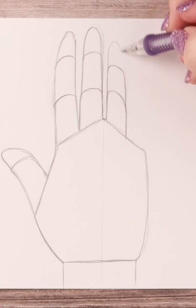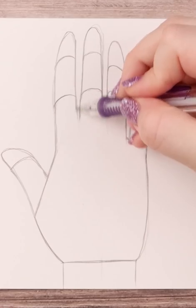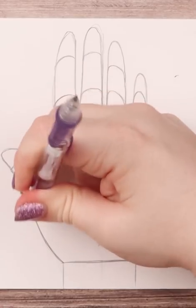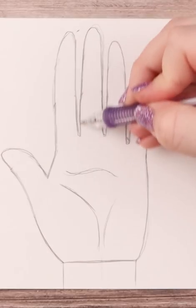The fingers can basically be broken down into three cylindrical sort of shapes. Just keep in mind that usually the middle finger is the longest followed by either the index finger or the ring finger and then the pinky of course being the shortest.